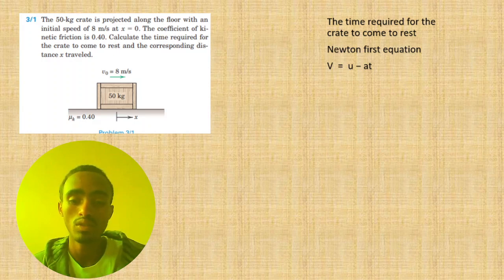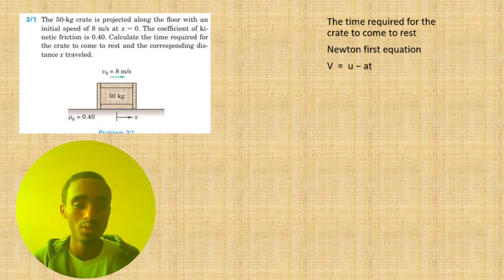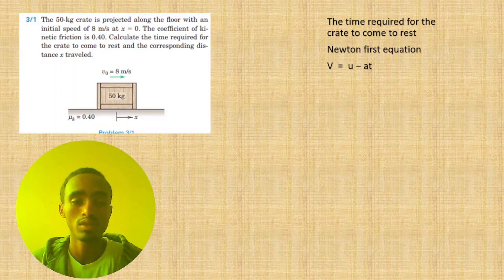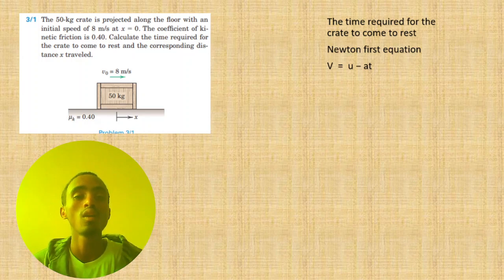For uniformly accelerated motion, acceleration is constant and velocity changes at a constant rate. Velocity equals v final minus v initial, which means acceleration equals (v final minus v initial) over time, or v equals u minus at. We can get this formula from differentiation of velocity with respect to time.